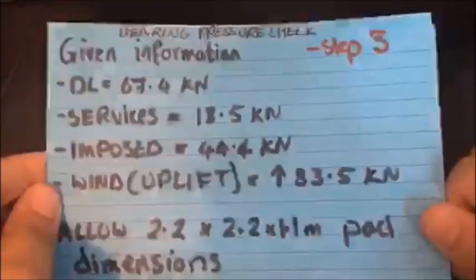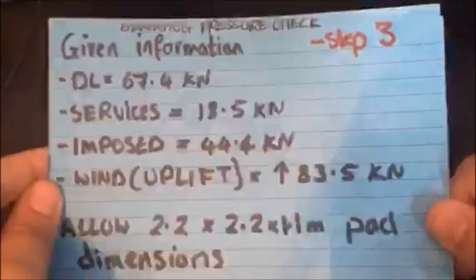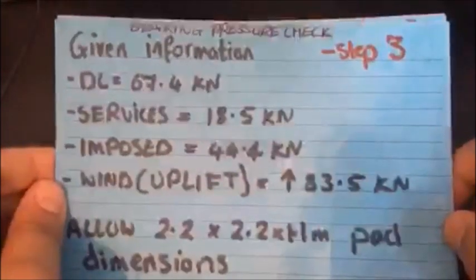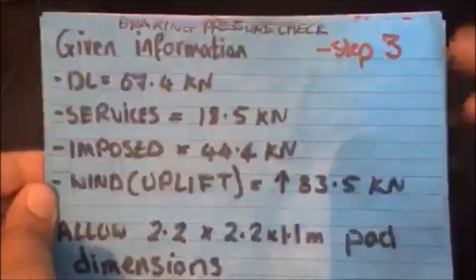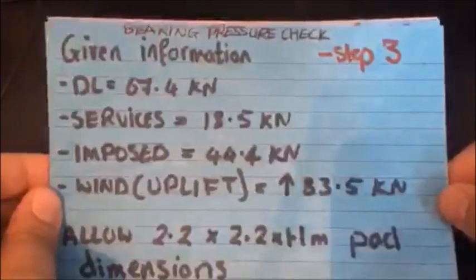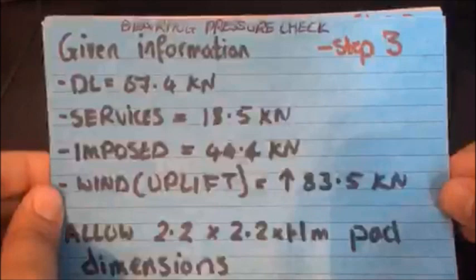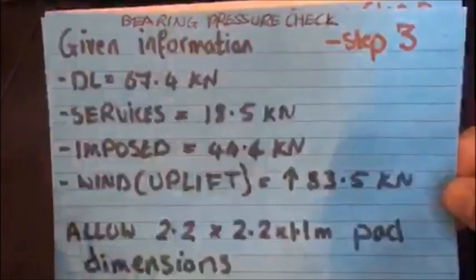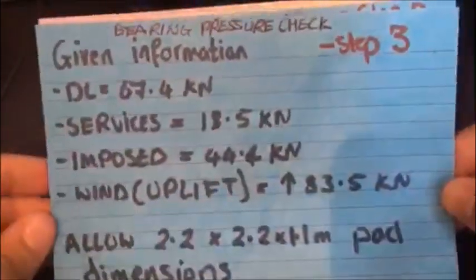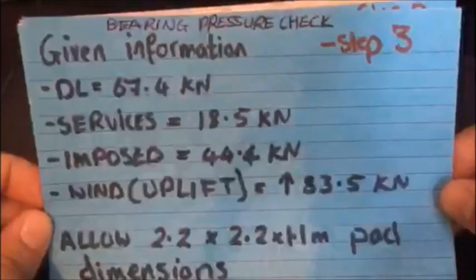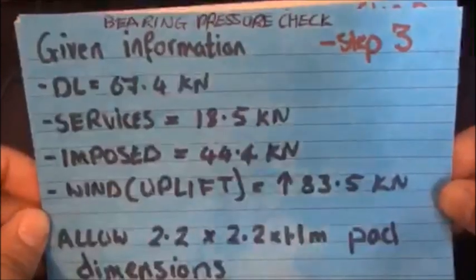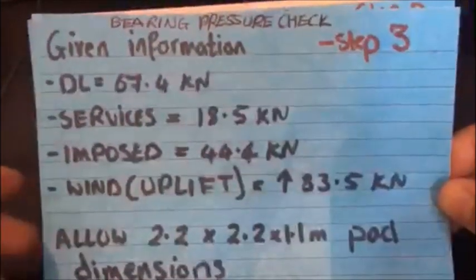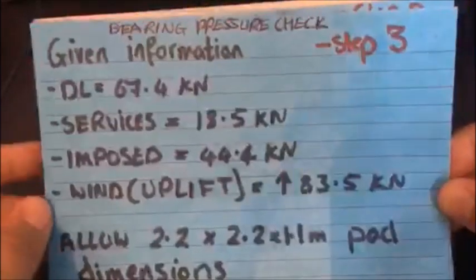Okay, so let's begin. This is the bearing pressure check, step three. I put them in steps just to make it easier. For example, if you're at university, your lecturer will give you this information. Or if you're in the office, clients come through with the dead loads, the service, the imposed, or the wind load. The dead load consists of the roof, the dead load of the rafters on the roof and the purlins. The imposed load is given in case someone wants to go up on the roof and change things or walk on it for whatever reason.